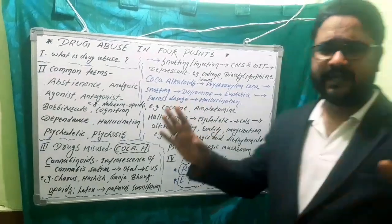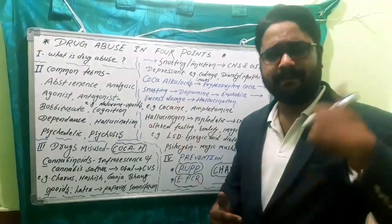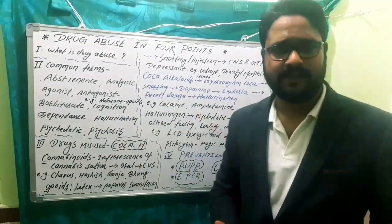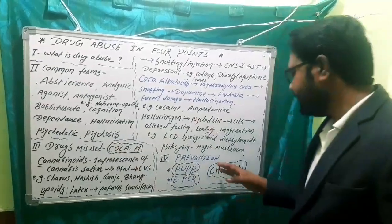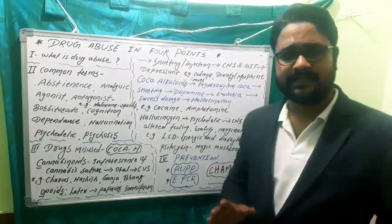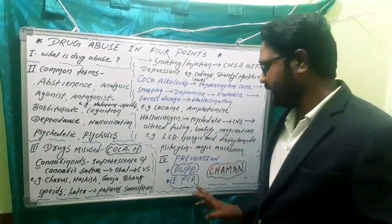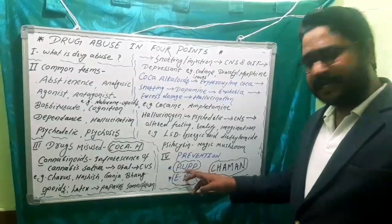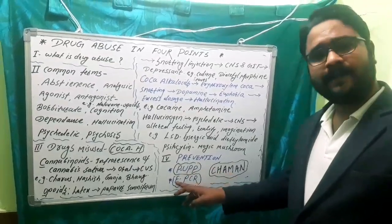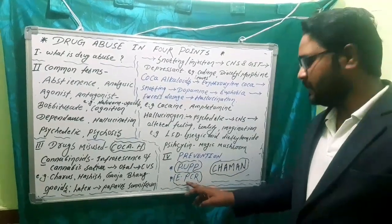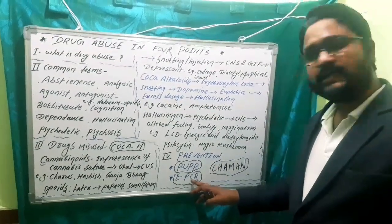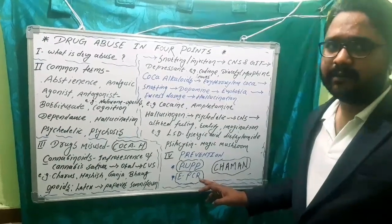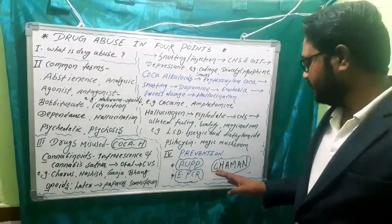R for rehabilitation center — at the end, if there is a habit, potential symptoms, or dependence, the person should be taken to a rehabilitation center. So in summary, prevention involves: Parenting without undue peer pressure, Education, Psychiatric help, Counselling, and Rehabilitation.